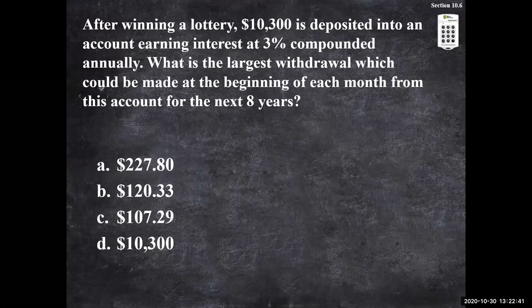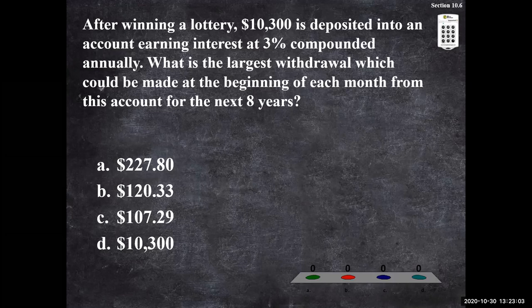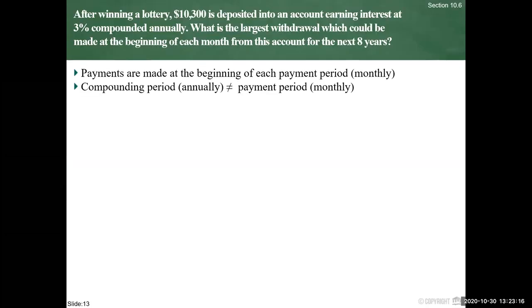Let's look at this example: after winning a lottery, $10,300 was deposited into an account earning 3% compounded annually. What is the largest withdrawal that could be taken at the beginning of each month for the next eight years? You can try this on your own and pause the video. The answer is $120.33. Payments are at the beginning of each period — that's an annuity due. We have annual compounding at 3% and monthly payments, so we have a general annuity due, requiring an extra step calculation.